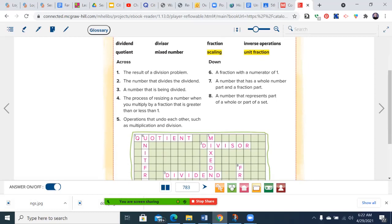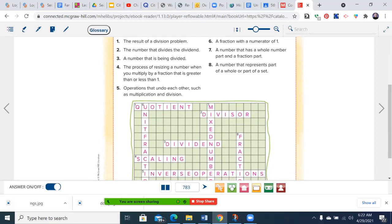Let's go through the vocabulary, which is always important. Number one across, the result of a division problem, is the quotient. Products are for multiplication, quotients for division. Number two across, the number that divides the dividend, is the divisor. That's the outside number. Number three across, the number that is being divided, is the dividend. That's the number inside when we're doing the standard algorithm.